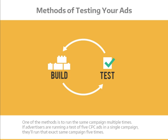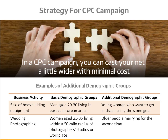The benefit of Facebook is that you can really hit your target profile. While the downside of a CPM campaign is that you're paying for every impression — even when it's aimed at the wrong audience — the advantage of running a CPC campaign is that you can cast your net a little wider with minimal cost. So you might start by targeting your key demographic, but then also run some ads aimed at other groups. The site that sells bodybuilding equipment could see if young women also want to get in shape using the same gear. A wedding photographer might produce a different ad and a lower offer to target older people marrying for the second time. Because those ads are CPC, if they miss and no one clicks, those campaigns won't have cost any money.